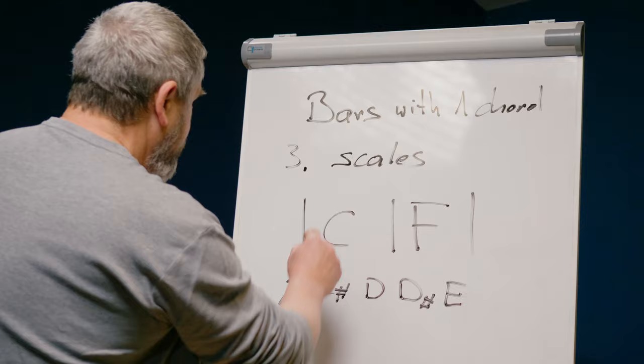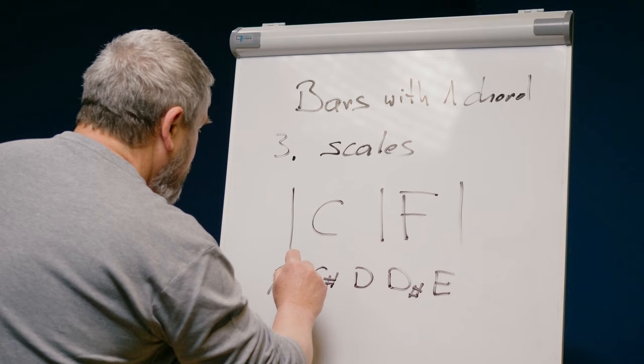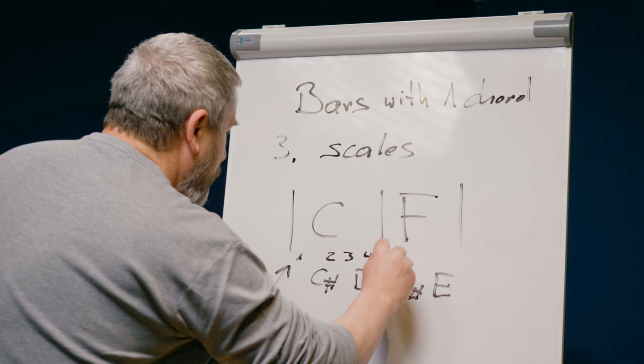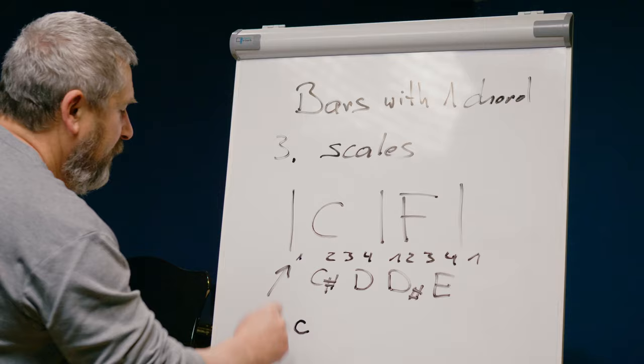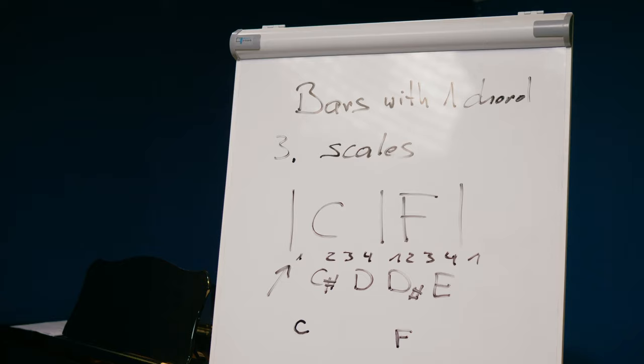So we have here the root that is still here. Let's say one, two, three, four. One, two, three, four. One, zero. So here we have the next root.